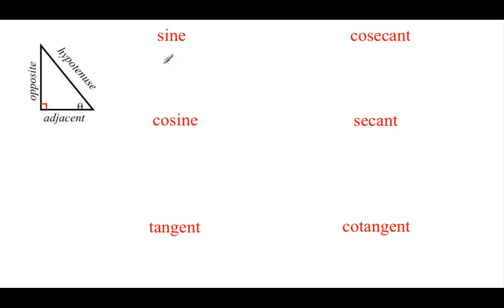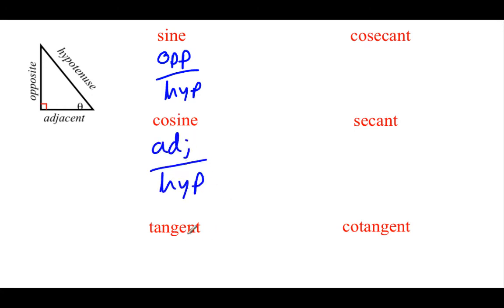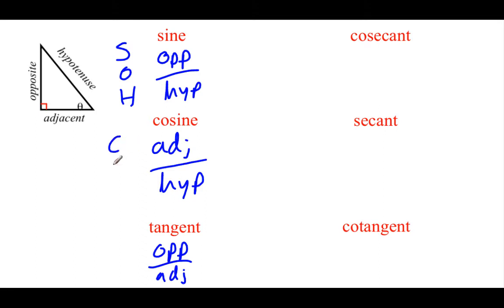To set up the sine, we take the opposite side over the hypotenuse. For the cosine, we take the adjacent side over the hypotenuse. And for the tangent, we go opposite over adjacent. You might remember from geometry we had the abbreviation SOH-CAH-TOA. For sine, we use opposite and hypotenuse — that's the SOH part. For cosine, that's the CAH, meaning adjacent and hypotenuse. Tangent is the TOA, meaning we go opposite over adjacent.